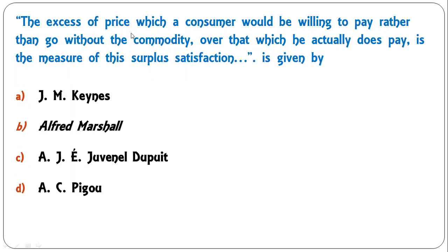Next: 'The excess of price which a consumer would be willing to pay rather than go without the commodity, over that which he actually does pay, is the measure of this surplus satisfaction.' This definition of consumer surplus was given by — Jenkins, Alfred Marshall, Jevons, Dupuit, or A.C. Pigou? The correct answer is Alfred Marshall; B is the correct answer.